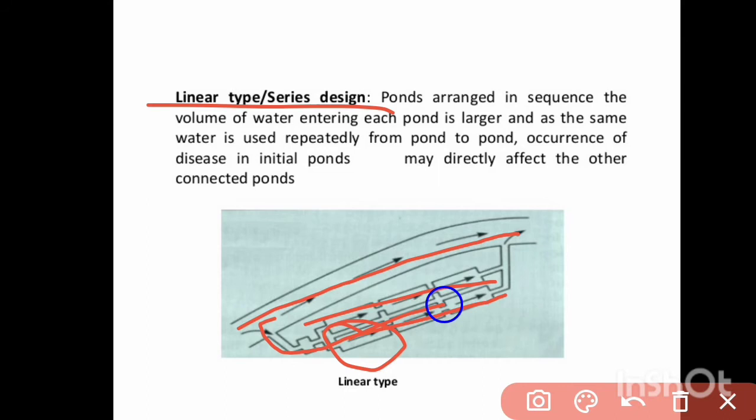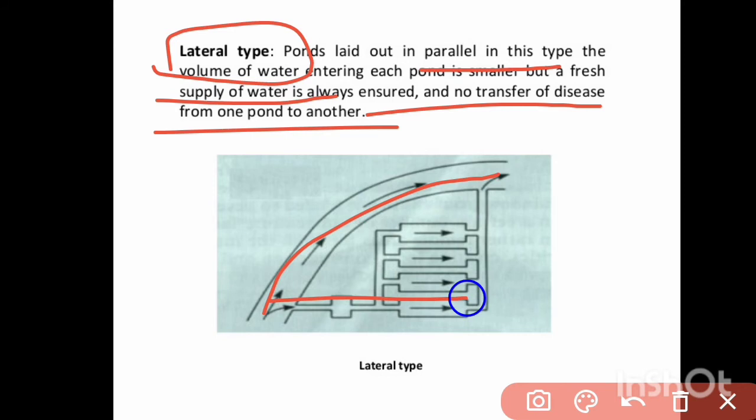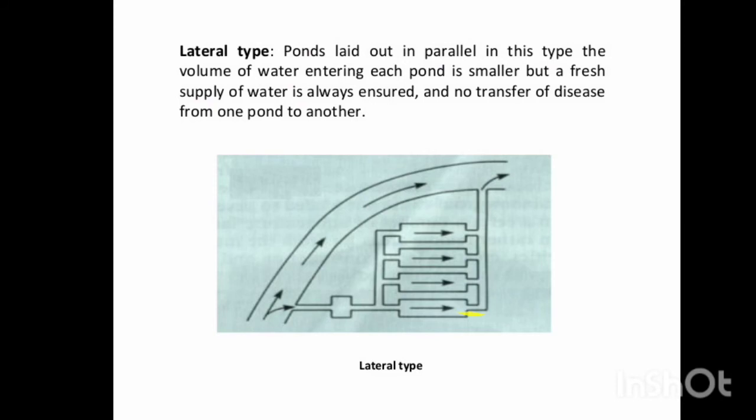Next is the lateral type arrangement. Ponds are laid out in a parallel configuration. The volume of water entering each pond is smaller, but a fresh supply of water is always ensured. There is no transfer of disease from one pond to another, because each pond receives a separate water supply.